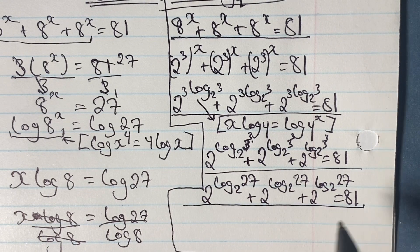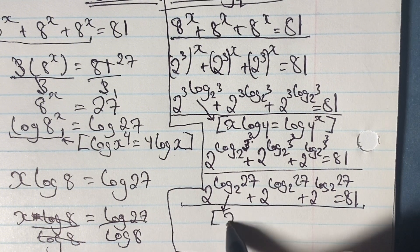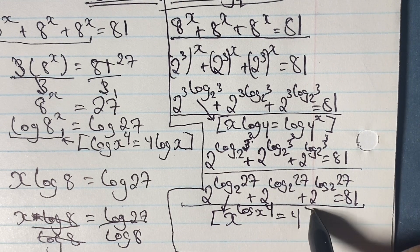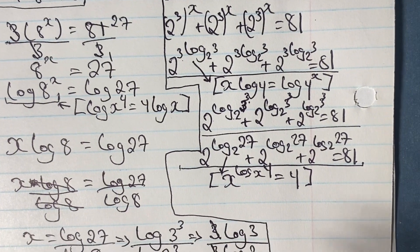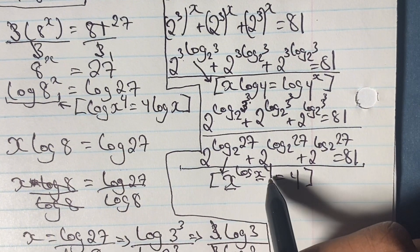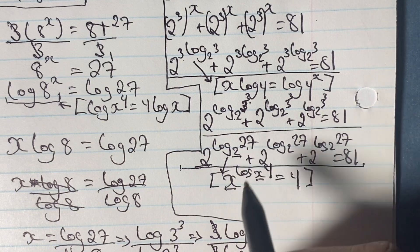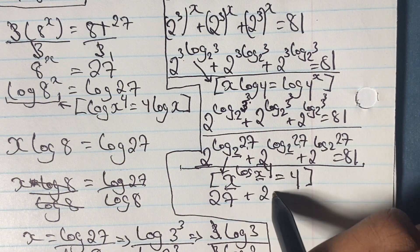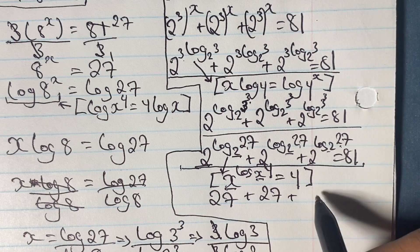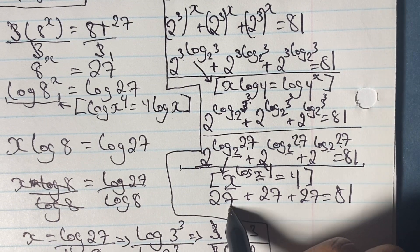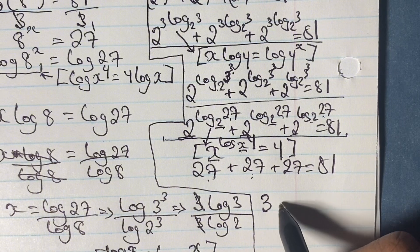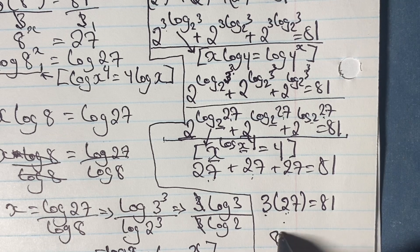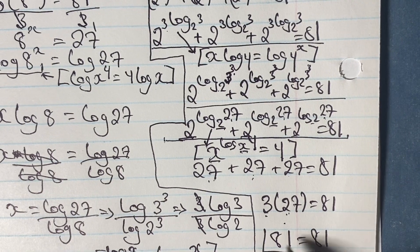Looking at what we have, we apply the rule that x to the power of log base x of y equals y — here both bases are the same, so 2 to the power of log base 2 of 27 equals 27. This gives us 27 plus 27 plus 27 equals 81, or 3 times 27 equals 81. We have confirmed that x is indeed equal to log base 2 of 3.